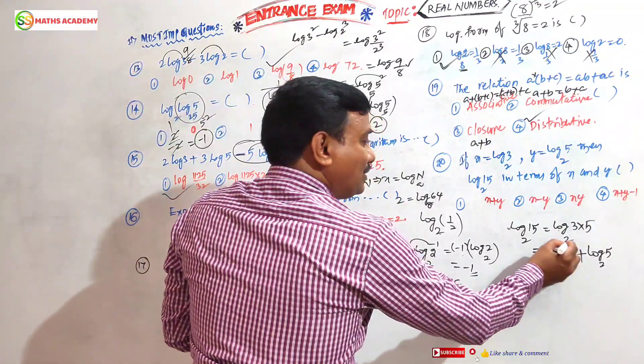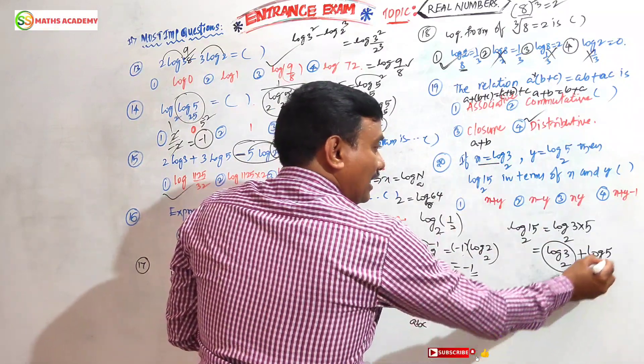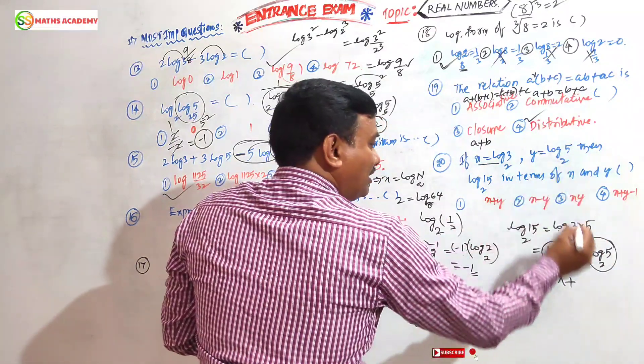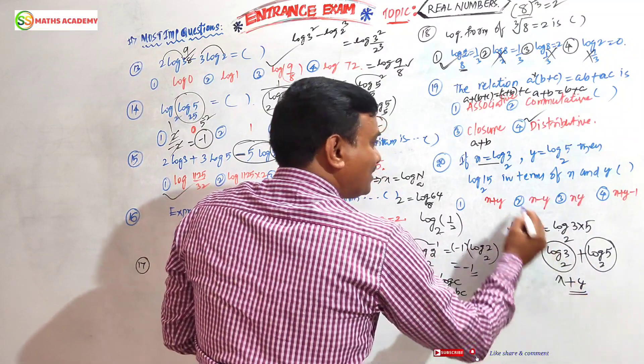Log₂(3) value is x, substitute it. Log₂(5) value is y, substitute it. We got the answer: x+y.